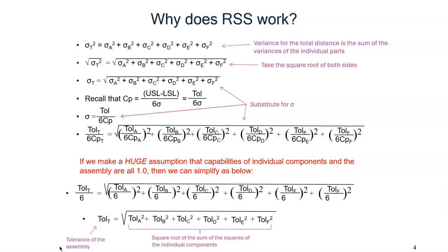The above is based on a huge assumption that the capabilities of each of the components is 1, a fairly conservative assumption, and that the capability of the assembly is 1. The assumption that the capability of the assembly is 1 gives us a plus or minus 3 standard deviation distribution. That means that 2,700 assemblies per million will be outside the RSS limits.